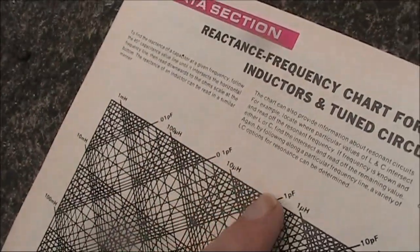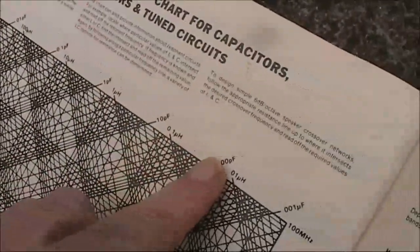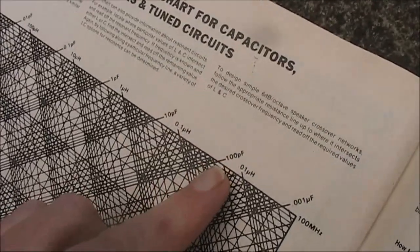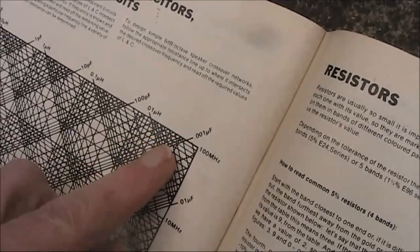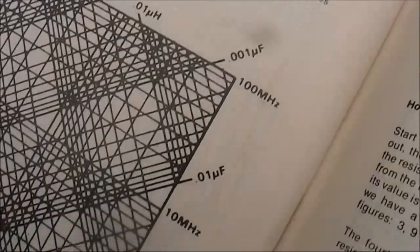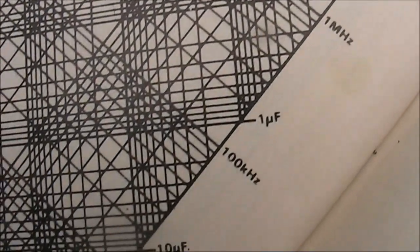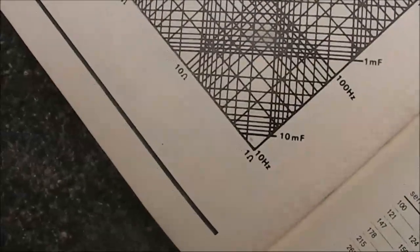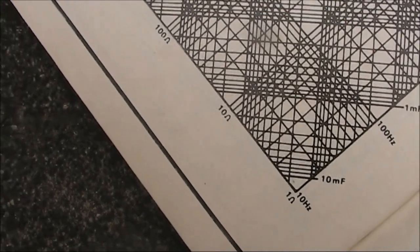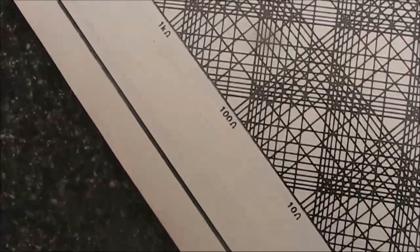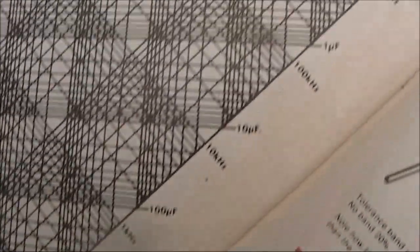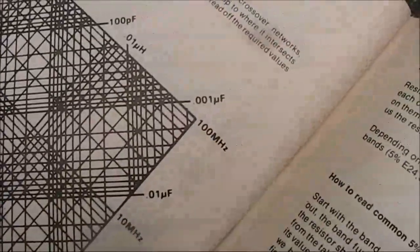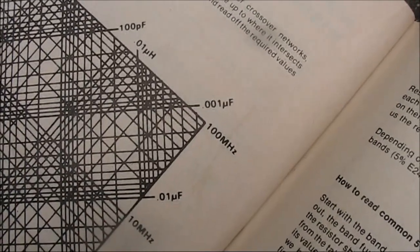Similar deal with capacitance. It goes up as you go up here to the right: 100 picofarad. These are very familiar types of values you'd use at RF. Then nanofarad goes up even more. Reactance across the bottom, a bit easier to understand as it's just vertical columns. And same with frequency, this particular chart goes from 10 hertz up to 100 megahertz. So there are other charts that do a bigger range.